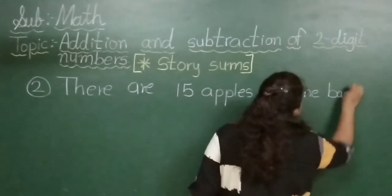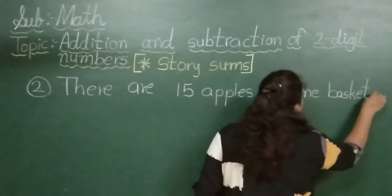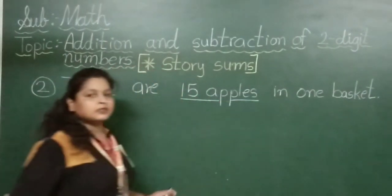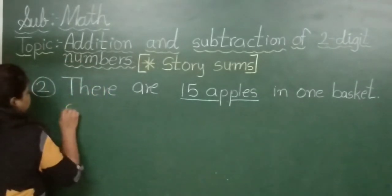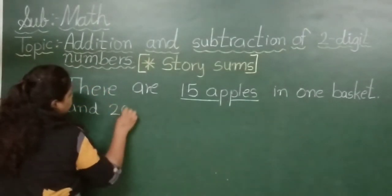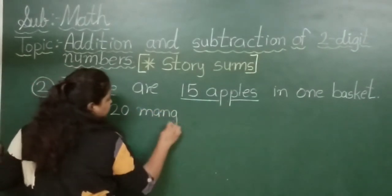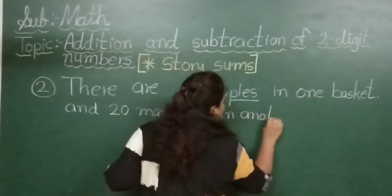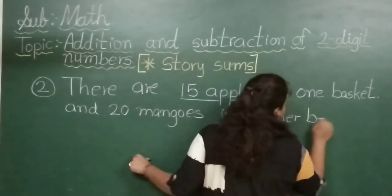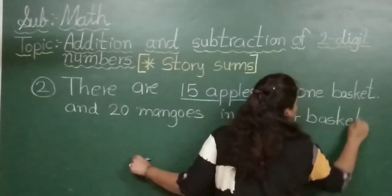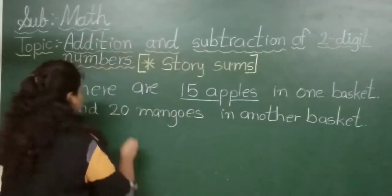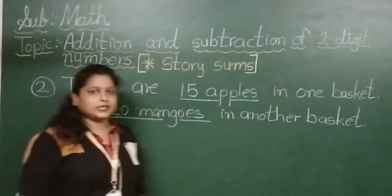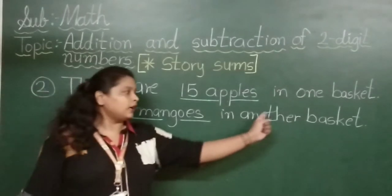There are 15 apples in one basket. One basket has how many apples? Yes, 15. And 20 mangoes in another basket. The second basket has how many mangoes? Yes, 20. 20 mangoes.